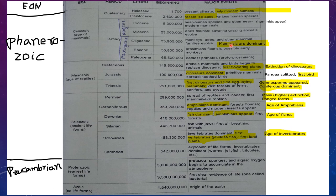Let's see what are the most important events. In Precambrian, remember: first clear evidence of life — unicellular bacteria — and accumulation of atmospheric oxygen. In Cambrian: explosion of life forms. In Ordovician: age of invertebrates and first land plants. In Silurian: fish with jaws and first air-breathing animals. In Devonian: age of fishes and amphibians appear. In Carboniferous: age of amphibians and forests flourish.